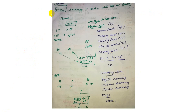The first instruction is XTHL. XTHL is an Exchange instruction. It exchanges the HL register content with the top of the stack pointer. If you look at the format, you can see the XTHL instruction. There is no operand.